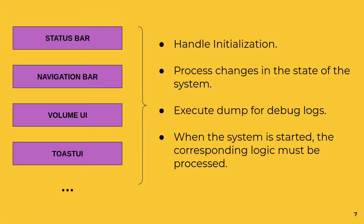The System UI components share some common characteristics. For example, the status bar, navigation bar, volume UI, toast UI — all these components have common characteristics. First, initialization has to be handled for all these components. Then they have to change according to the state of the system — whenever the state of the Android OS changes, they have to react. For example, if the battery charge is low, it has to show a notification.